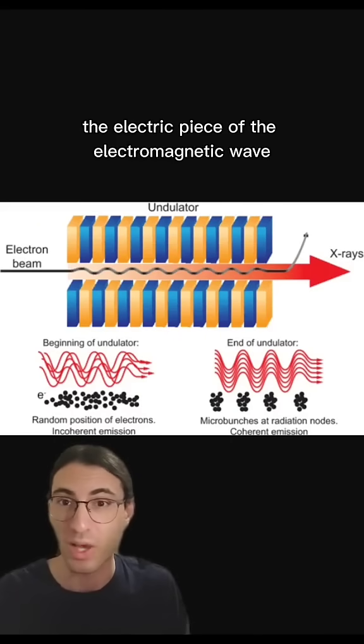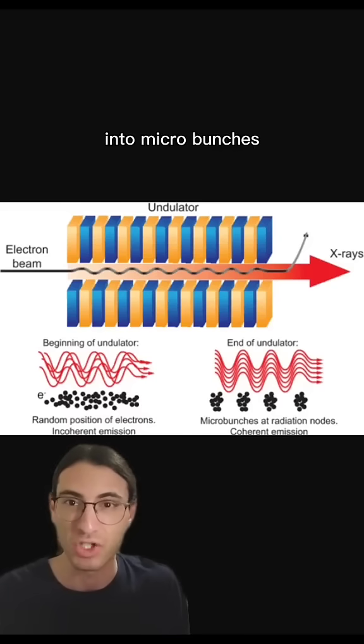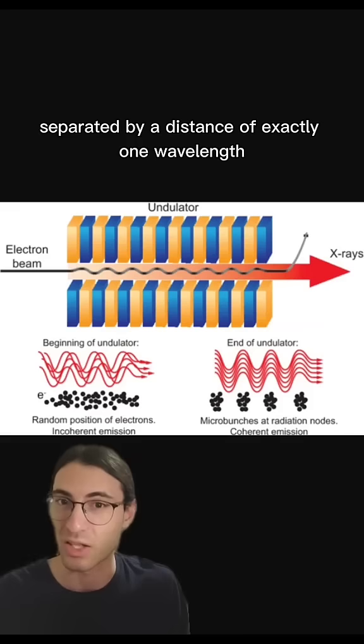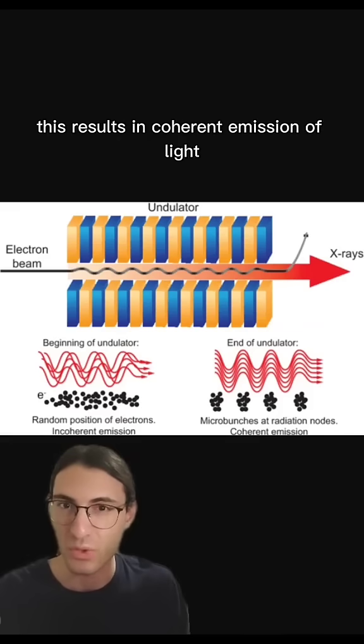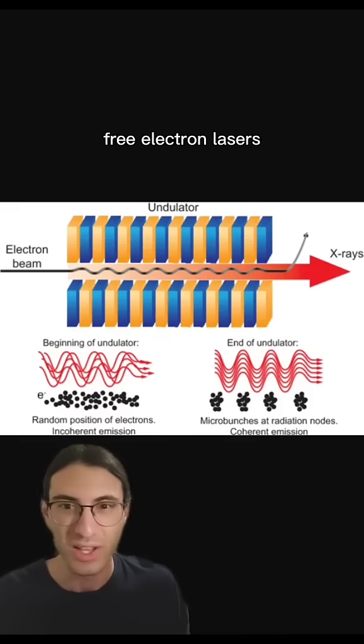These are separated by a distance of exactly one wavelength. This results in coherent emission of light. All of the electrons emit their radiation in sync. And so there you have it, free electron lasers.